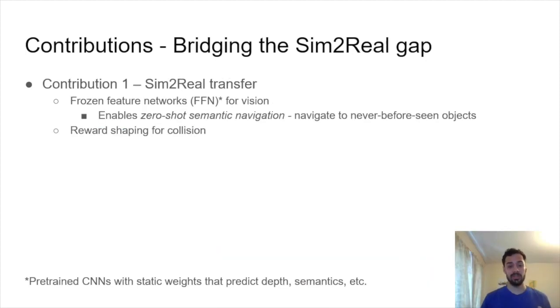So this brings us back to our first contribution, which is in Sim2Real transfer. Our vision issue is tackled using frozen feature networks or FFNs. And in doing so we get this nice property called zero-shot semantic navigation where we can navigate to never before seen objects and even semantic classes. We tackled the collision issue with reward shaping.